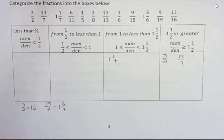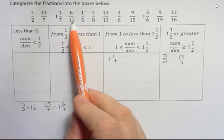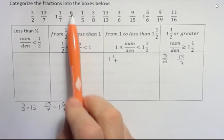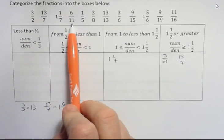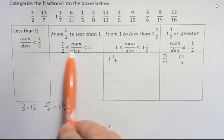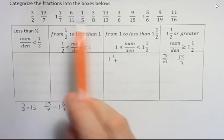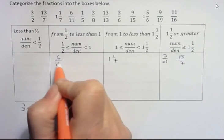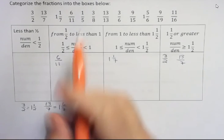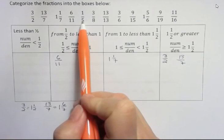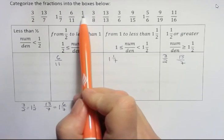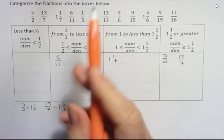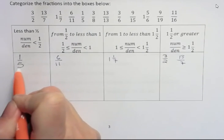What about 6 over 11? Well, what is half of 11? Half of 11 is 5.5 and 6 is a little more than that. So this is a little bigger than 1 half. So it's greater than 1 half, but it's not 1 because 11 over 11 would be 1. So 6 over 11 goes into this box. 1 over 5. Well, half of 5 is 2 and a half and this number is definitely less than that. So it's less than 1 half. So 1 fifth would go into the box that's less than 1 half.